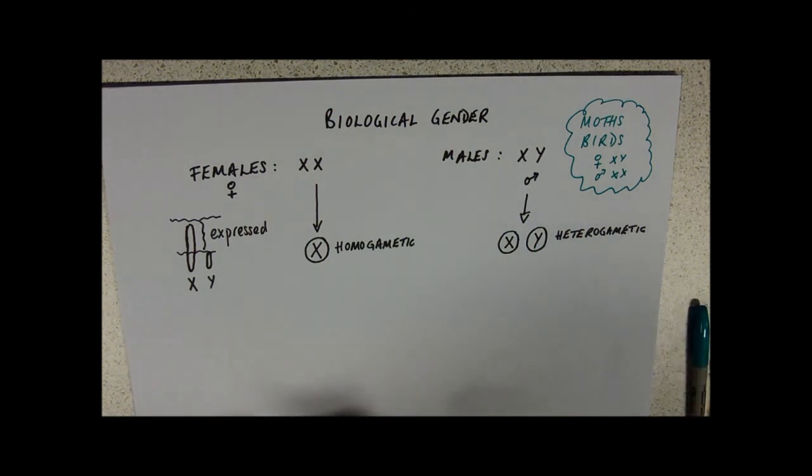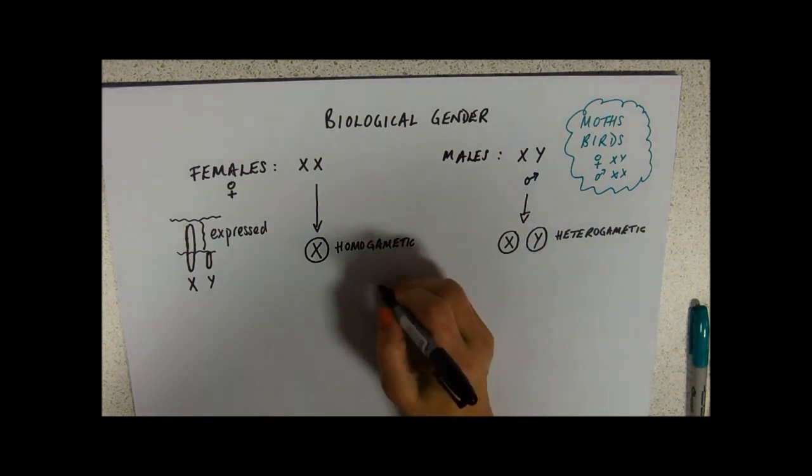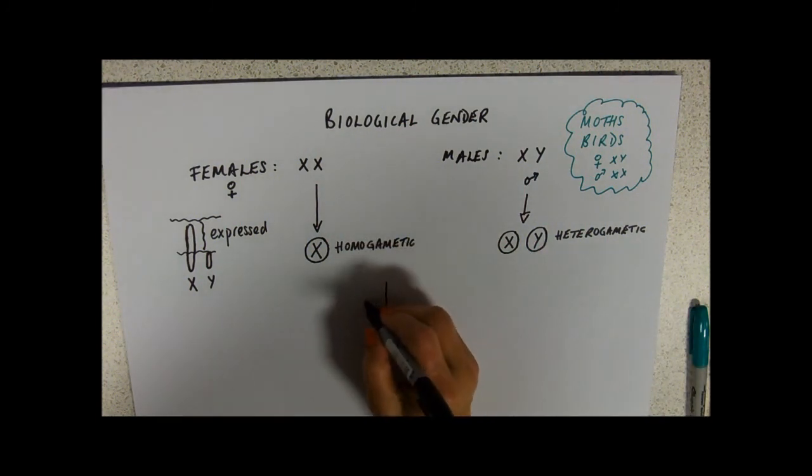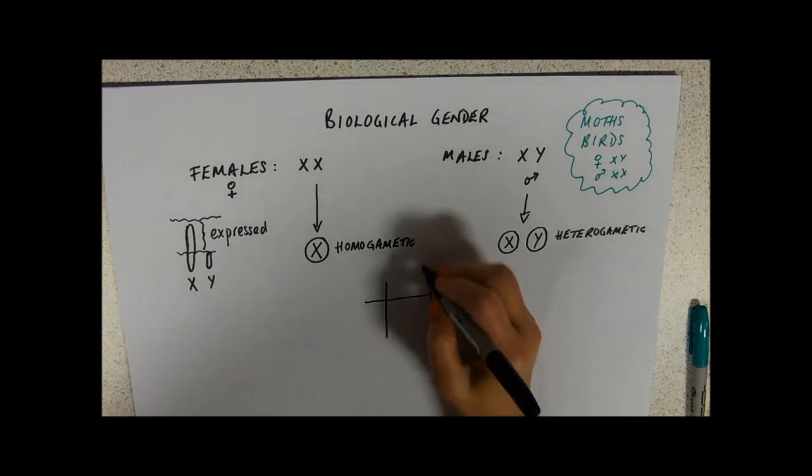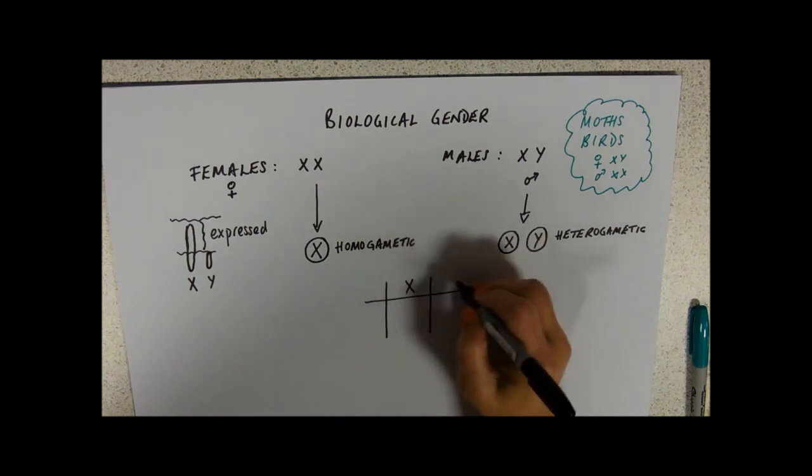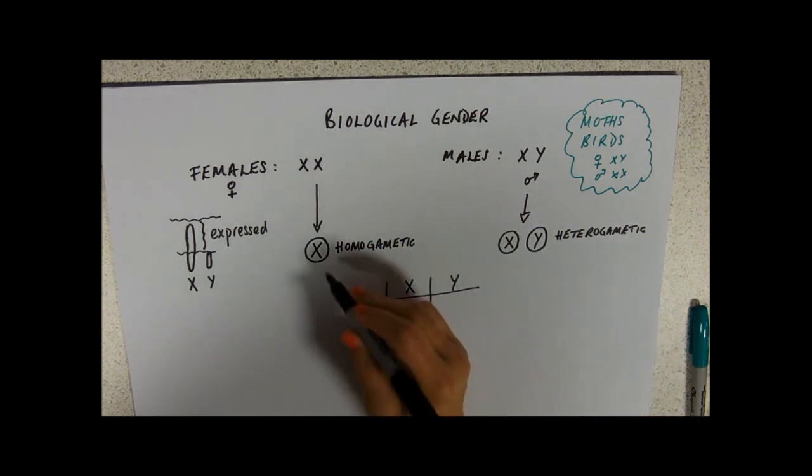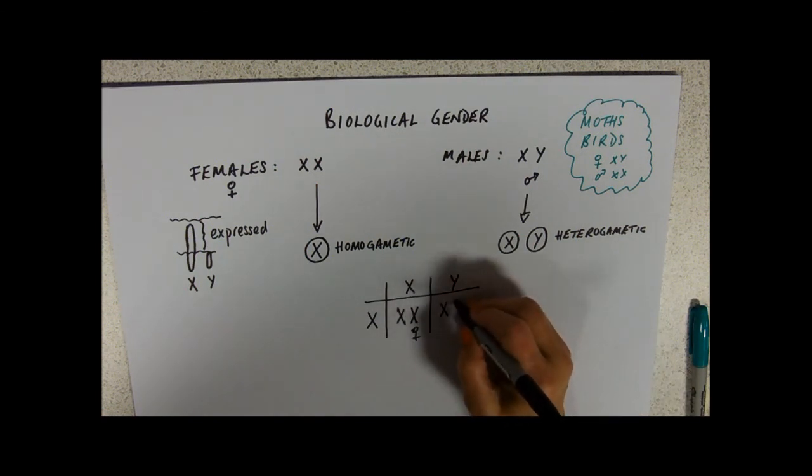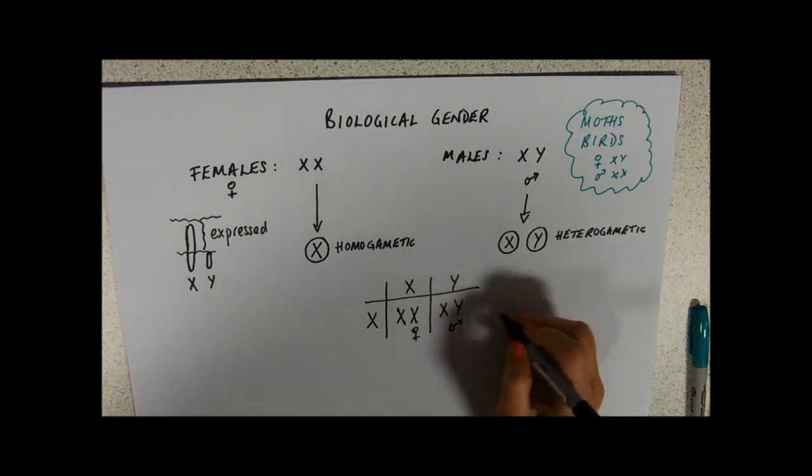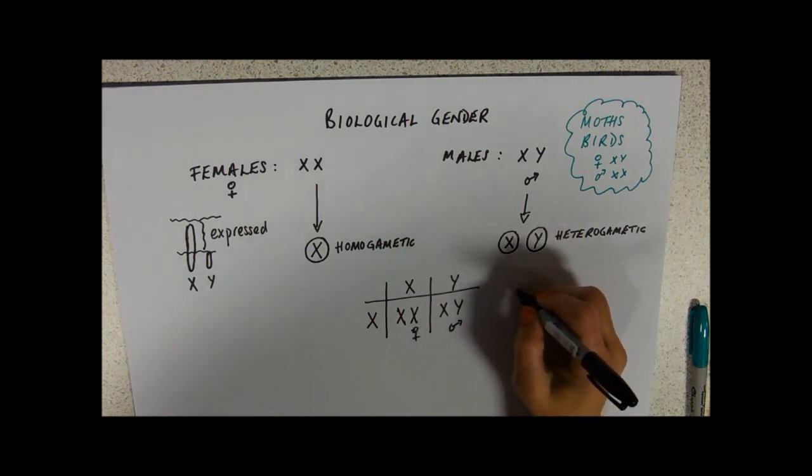So, let's have a look at what happens then in our Punnett square. So, male parent XY, female parent only contributing X chromosomes to give a female and a male. And that means that you've got a